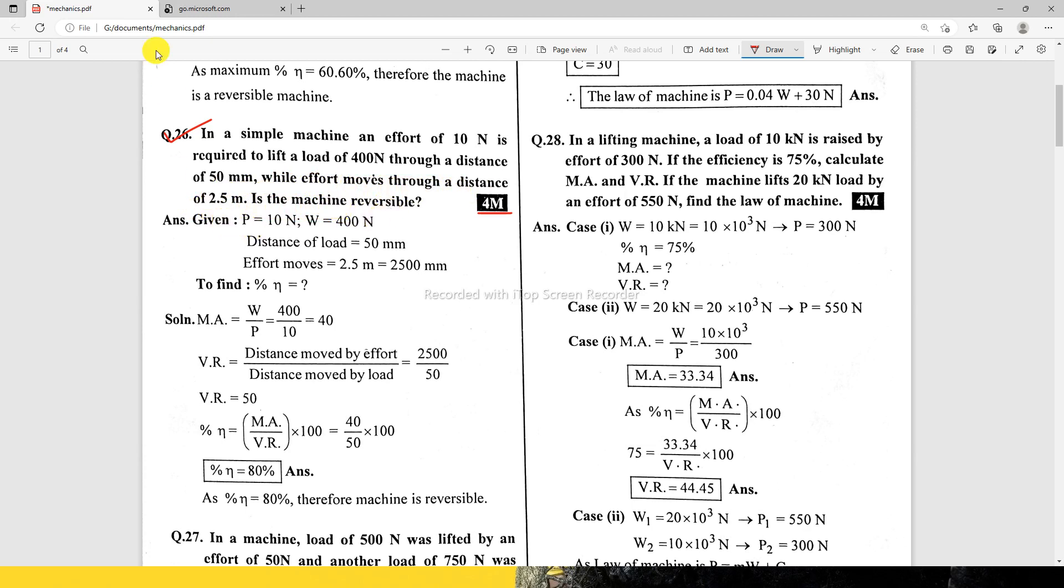So given, we have to write the basic given values. Load W equals 400 newton, effort equals 10 newton, distance of load equals 50 mm.